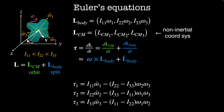When we expand this term-wise, we get three different equations. The torque in the omega_1 hat direction is equal to i11 times omega_1 dot, minus i22 minus i33 times omega_2 times omega_3. Likewise, the torque in the omega_2 hat direction is i22 times omega_2 dot, minus i33 minus i11 times omega_1 times omega_3. And the torque in the omega_3 hat direction is given by i33 times omega_3 dot, minus i11 minus i22 times omega_1 times omega_2.